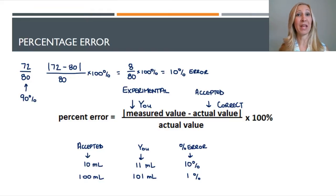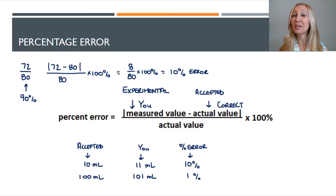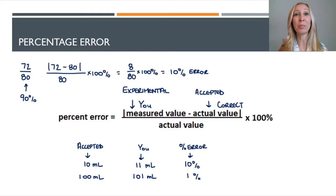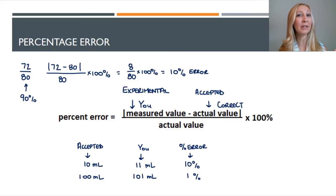Think of it like this: if you're broke and you lose $5, it's a really bad day because you don't have a lot of money to begin with. But if you're a billionaire and you lose $5, it's probably not a big deal because $5 is only a small percentage of what you have in total. Even though in both situations you're losing $5, it really impacts the outcome because of what that person started with. That's how percent error works — even though in both situations I was off by only 1 milliliter, it had a greater percent impact on the first example where I was measuring only 10 milliliters.